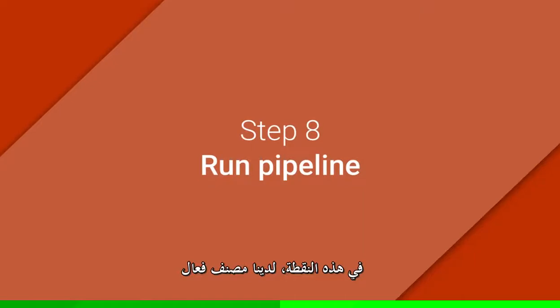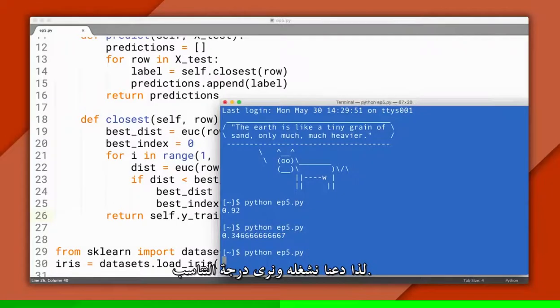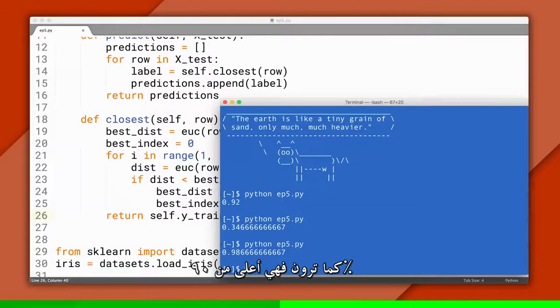At this point, we have a working nearest neighbor classifier, so let's run it and see what the accuracy is. As you can see, it's over 90%, and we did it.